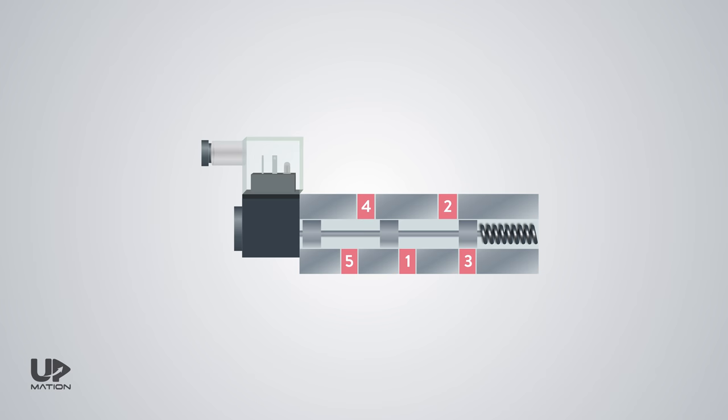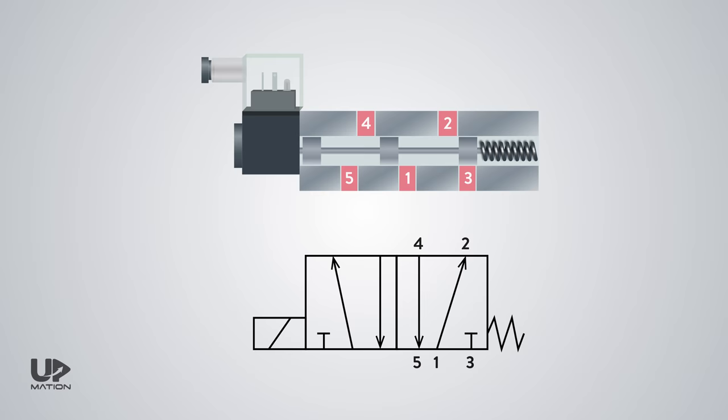As I've mentioned, this valve has 5 ports and this is the ISO designation of the ports, which is a common practice. But sometimes, you may see an alternative designation of the ports in DCVs by alphabets, in which the P is for power or pressure that comes from the air source. The EA and EB are for the exhaust ports and the A and B are the output ports to or from the actuator.